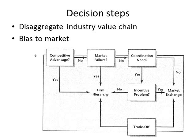So what are the decision steps for making versus buying? First, disaggregate the industry value chain — raw materials, components, finished goods, distribution, retailers, and the ultimate customer — and figure out what to do in-house and what to leave to the market. The golden rule is that in general, markets are better — not perfect, but better — so when in doubt, a market transaction may be the right choice.